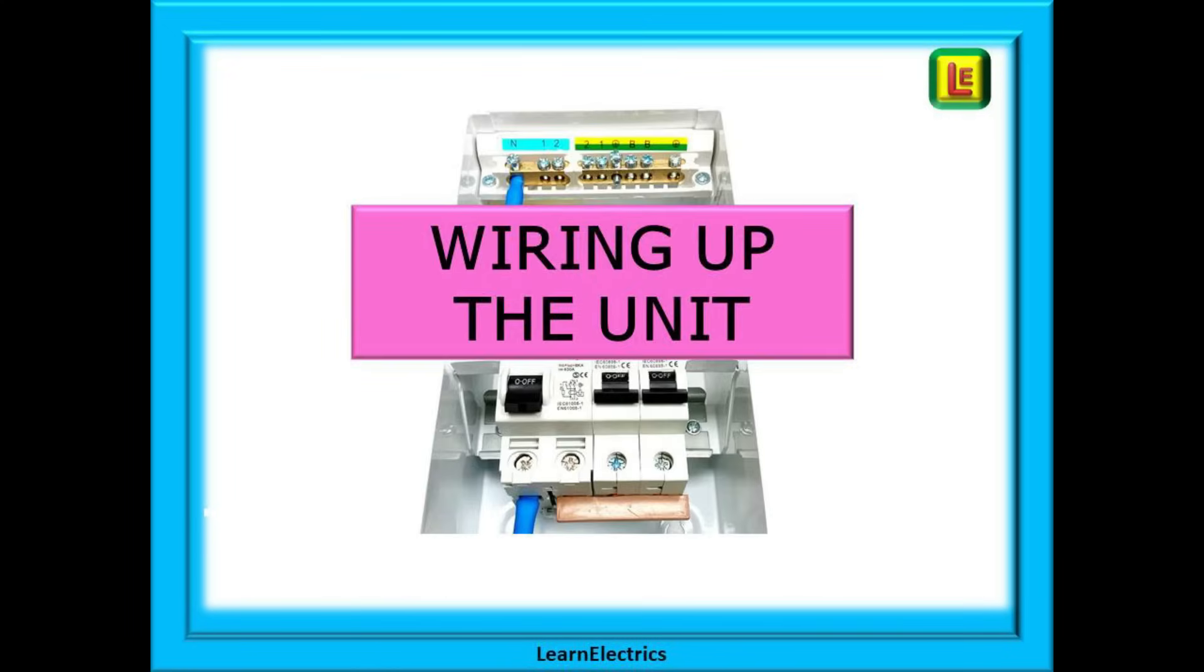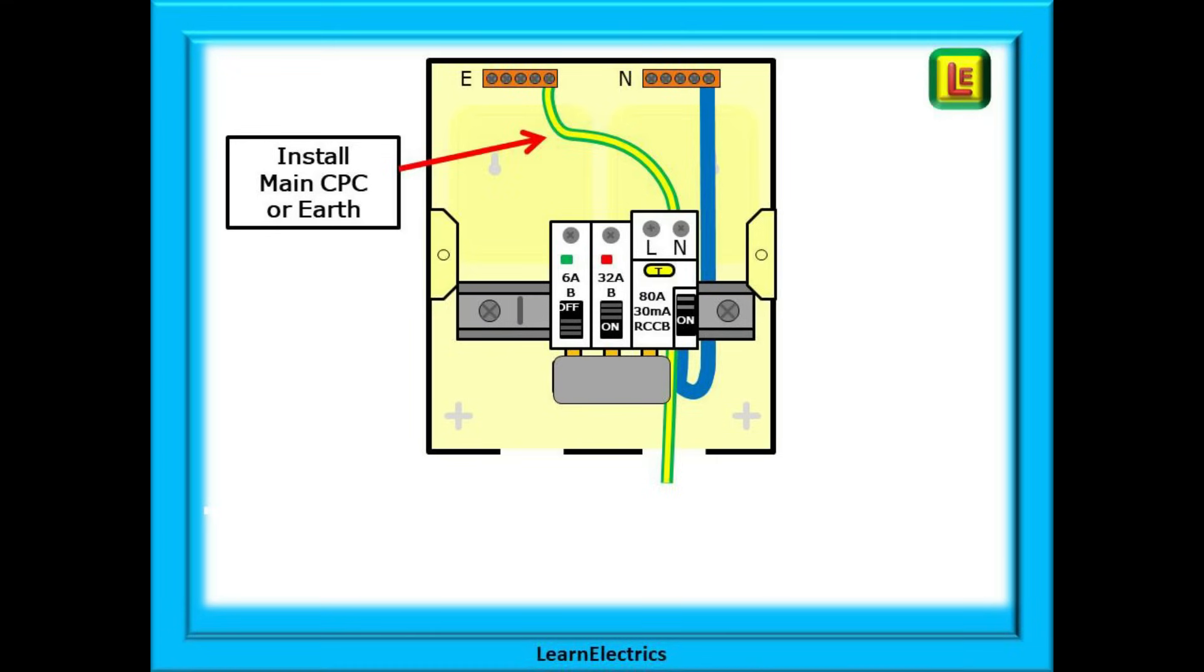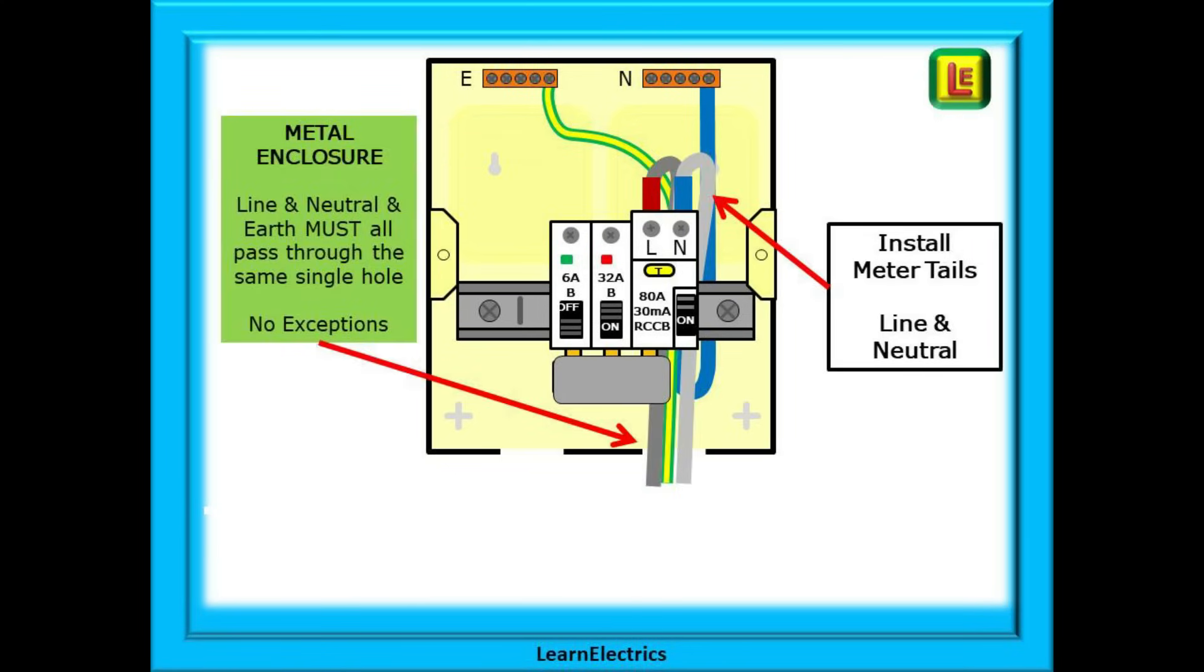Okay, wiring up the unit and this is just one method. Start by installing the main CPC or earth and if these are singles this must be through the same hole that the main tails will pass if the unit is made of metal. Now install the line and neutral or main tails. If the garage unit is made from metal then the line and neutral and earth must all pass through the same hole in the garage unit. The wiring regulations do not permit them to pass through separate holes. It's not negotiable and it's a fail on any assessment or inspection.